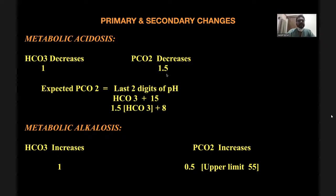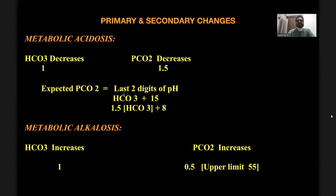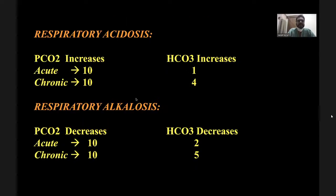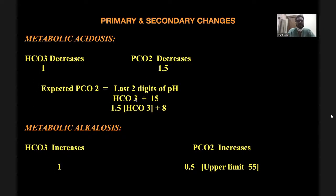You should know the expected PCO2 for a given pH. The easy way to calculate: the expected PCO2 equals the last two digits of the pH. For example, if pH is 7.43, expected PCO2 is 43; if pH is 7.20, expected CO2 is 20. For more accuracy, some people use bicarb plus 15, or Winter's formula: 1.5 times bicarb. But at bedside, simply use the last two digits — if pH is 7.34, expected CO2 is 34.